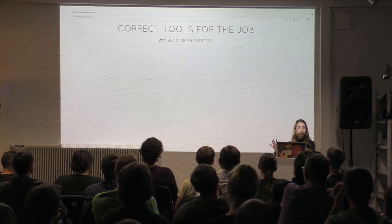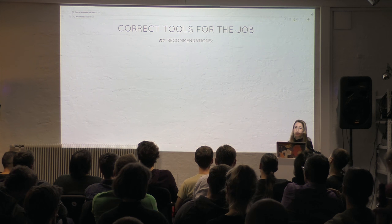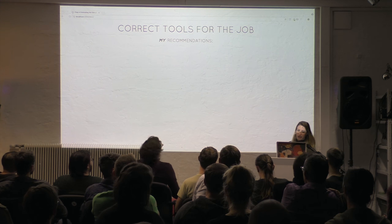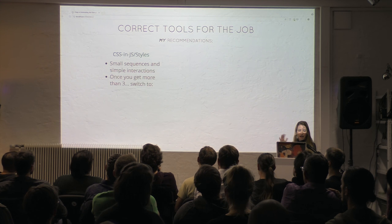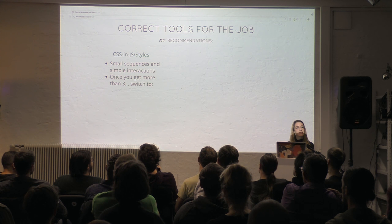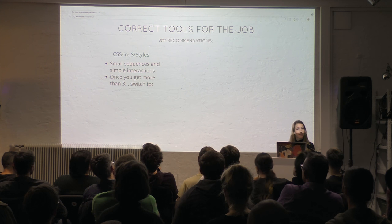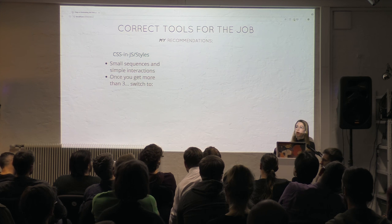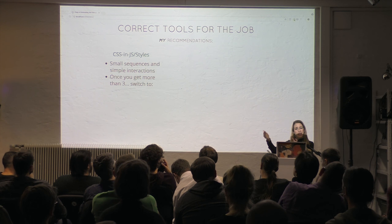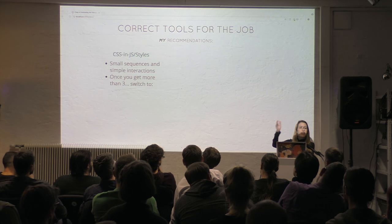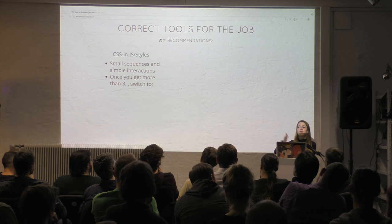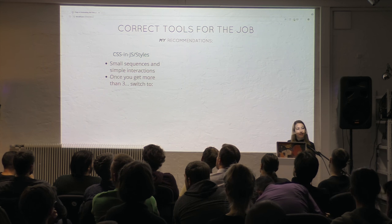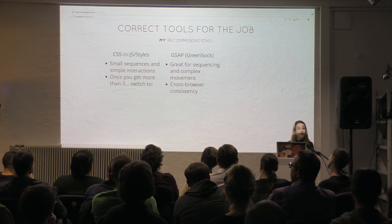I experiment a lot with animation technologies, so let me give you my recommendations. CSS or JS styles are really good for small sequences and simple interactions because you don't have to load any other library — it's very cheap and declarative. But for more complex sequences, you end up staggering animations based on a delay, and every time you chain them you chain another delay — so if you need to change timing, you have to update all those values. Once you get to three chained animations or more complex movement, I'd consider moving over to GreenSock. It's really great for sequencing complex movement and for cross-browser consistency.